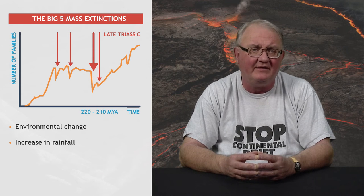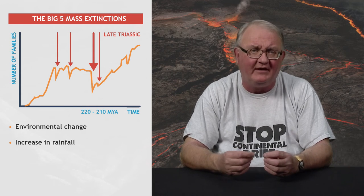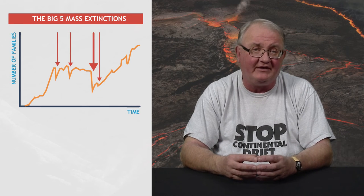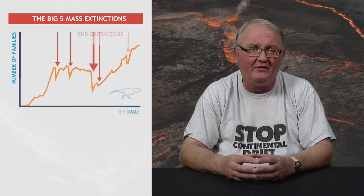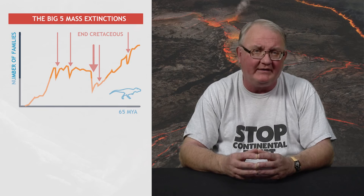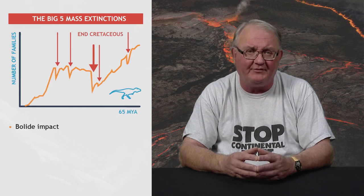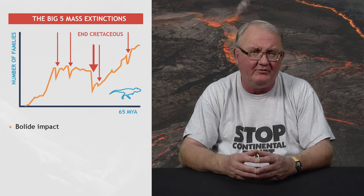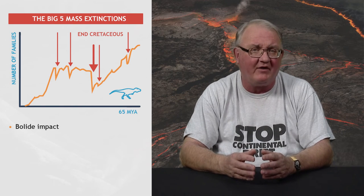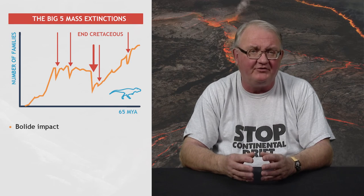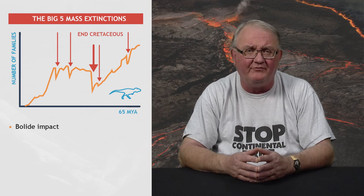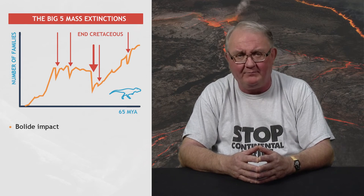The K-Cretaceous extinction, about 65 million years ago, is the only major mass extinction for which multiple lines of evidence of a bolide impact are available, such as a peak in abundance of platinum group elements, including iridium. These are otherwise much rarer in the Earth's crust than elsewhere in the solar system. The search for iridium anomalies at other extinction horizons has failed to produce equally conclusive evidence of impacts.